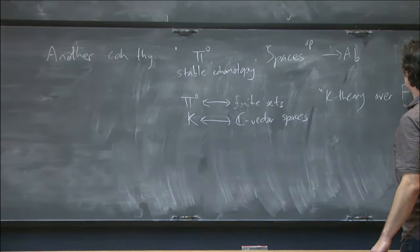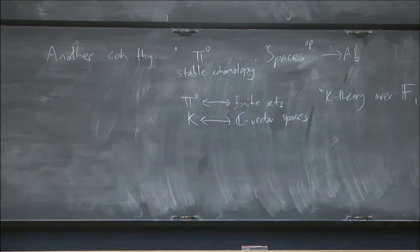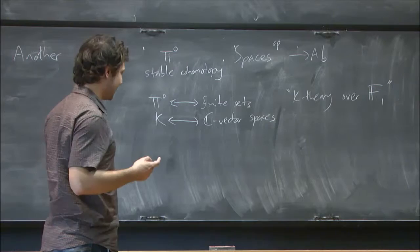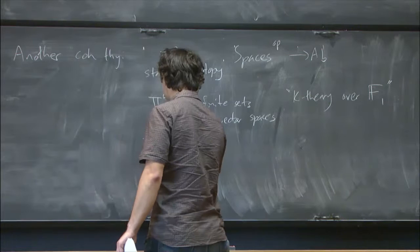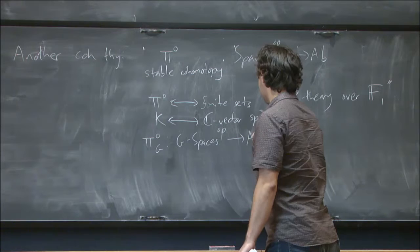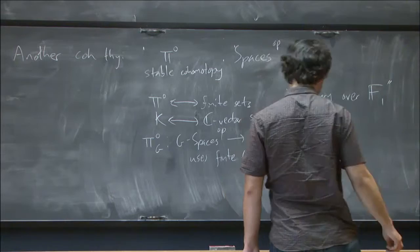So you can think of it as K-theory over the field with one element, if you like. You can't give exactly the same kind of definition of this. If you try to imitate the definition of K-theory, you'd get something that only sees pi one of your space. But this is really the right picture. Okay. So that's the cohomology theory we can talk about. And it also has a genuine equivariant analog going from, again, the opposite category of G-spaces to abelian groups, which uses finite sets with G-action instead.